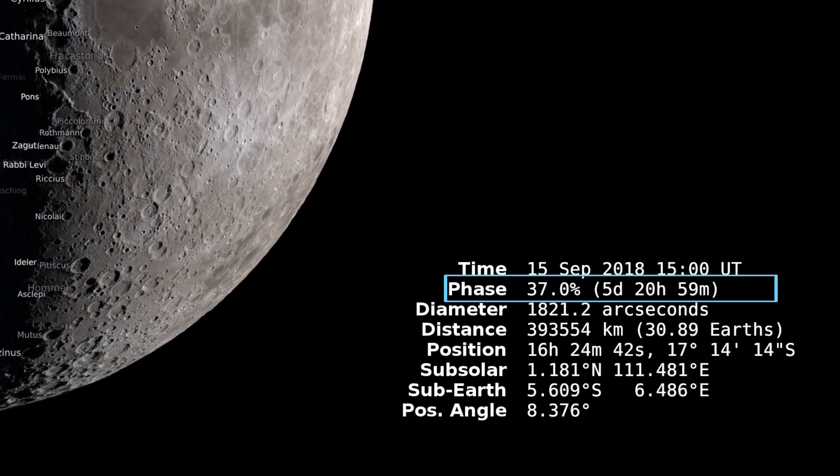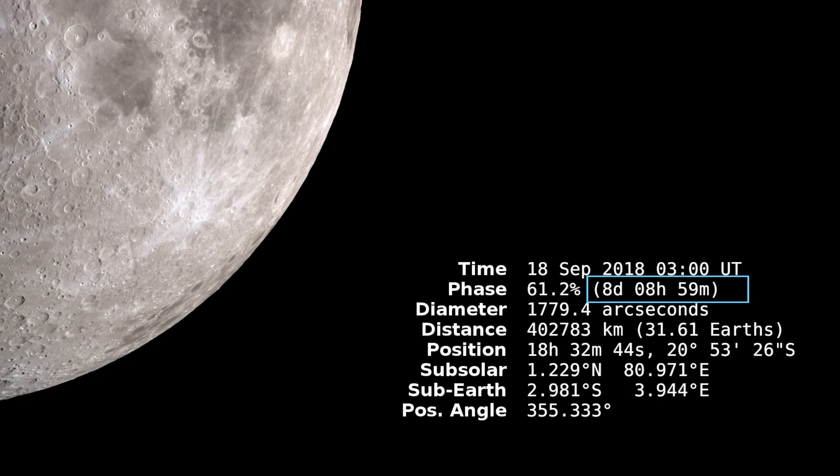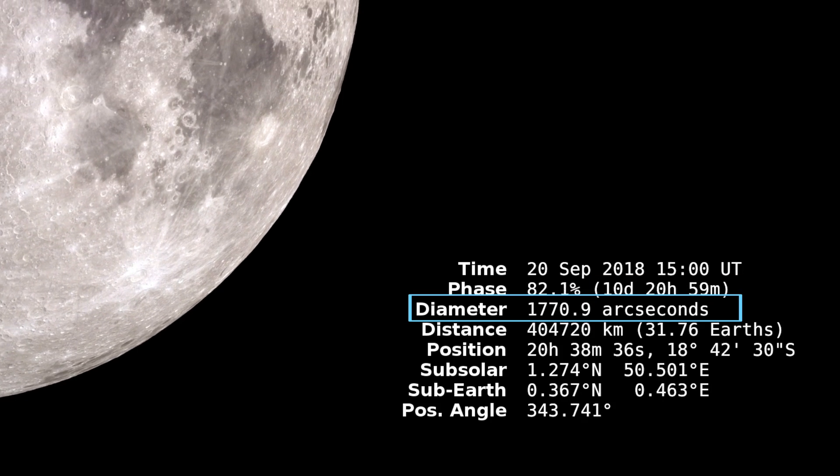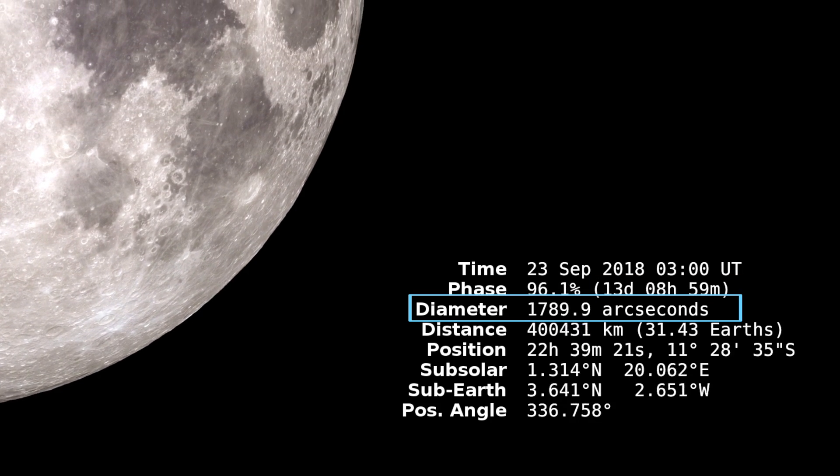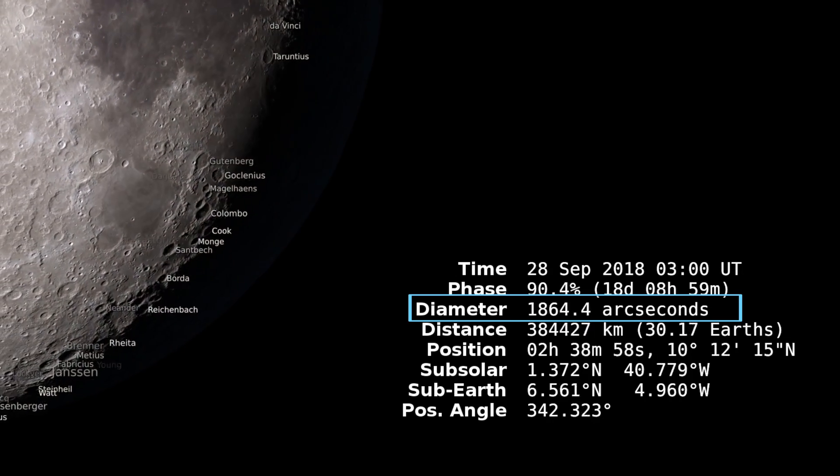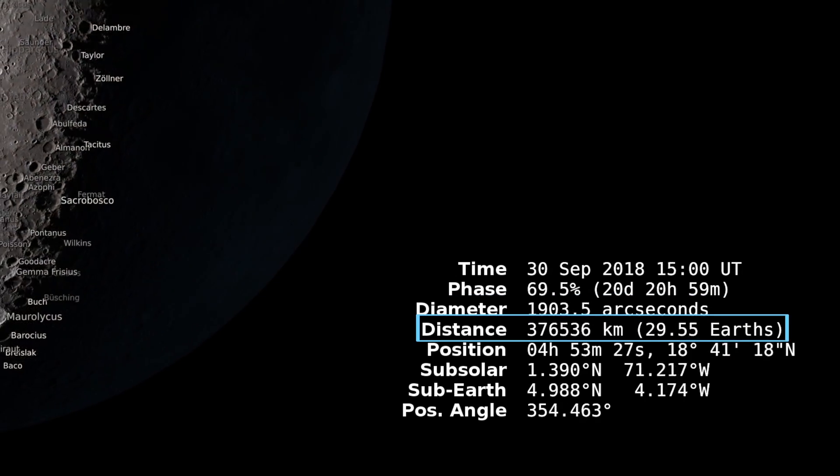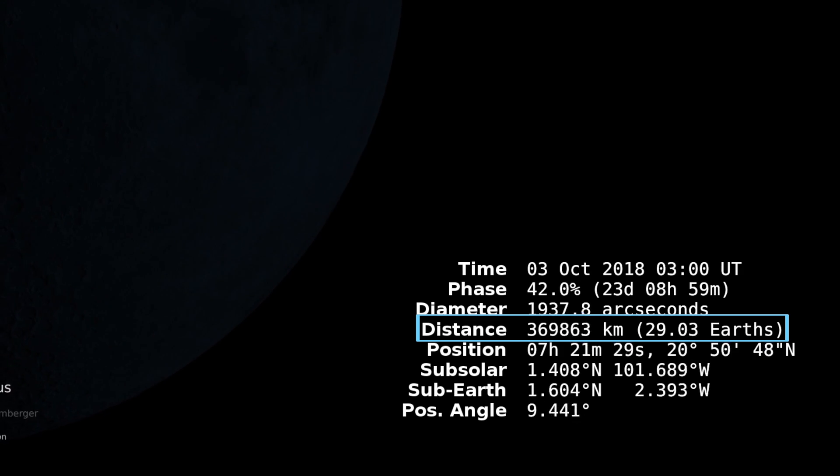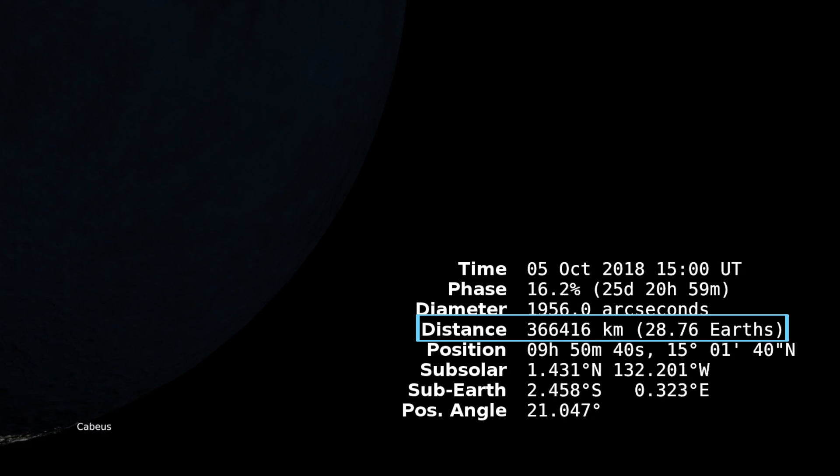The diameter is just how wide the moon appears on our sky. It's not actually like the diameter of the moon is changing. It's how it appears. The distance is done in kilometers and earth distance.